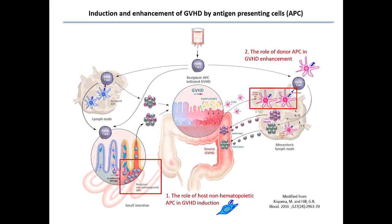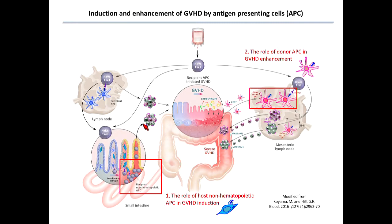This is a graphic summary of today's talk. As you know, the naive T-cells are the mid-stage GvHD cells. They are migrating and going to the lymph node or target organ directly, and then they are presented antigens by the recipient APCs — mostly recipient APCs — including hematopoietic APCs or also the non-hematopoietic APCs, which are not really appreciated so far.